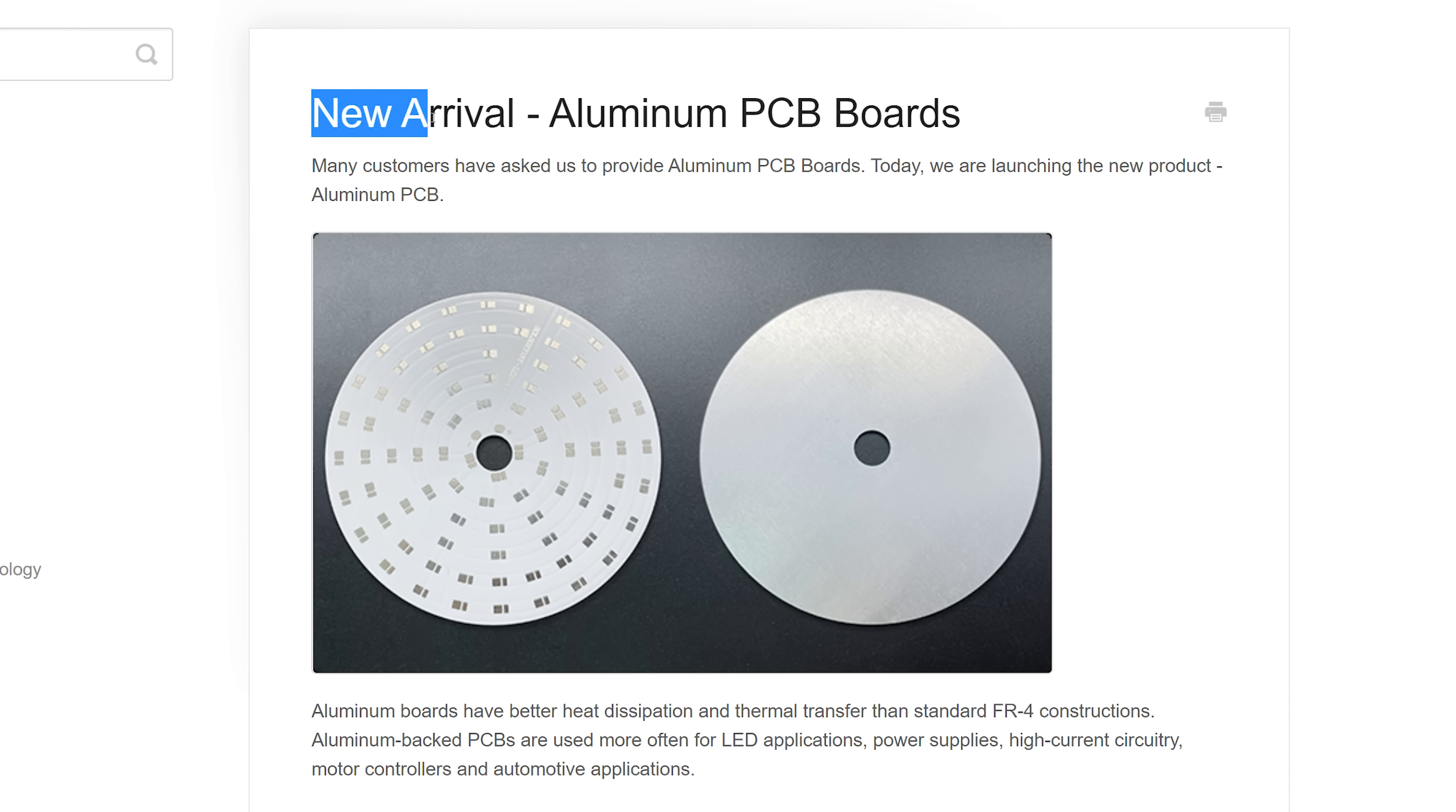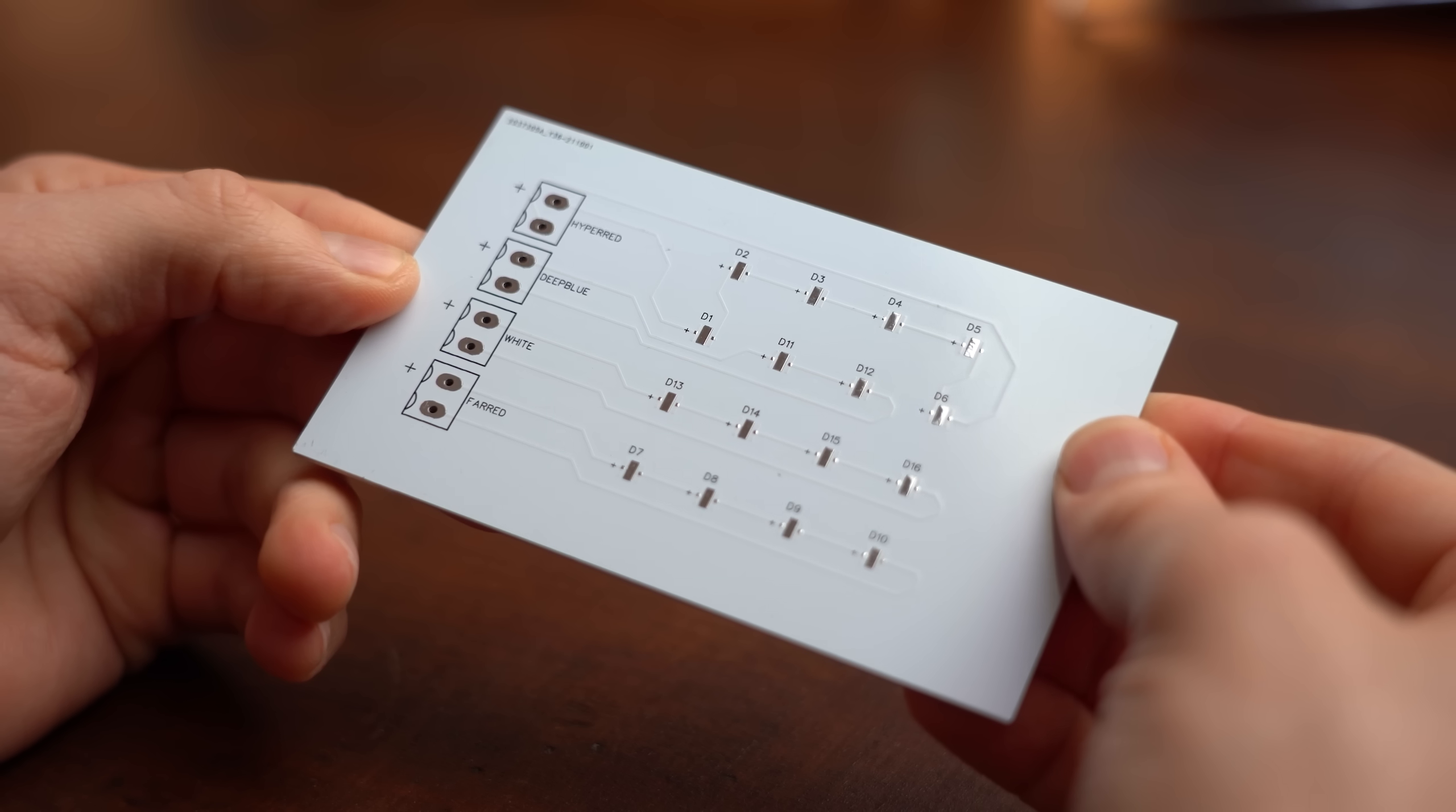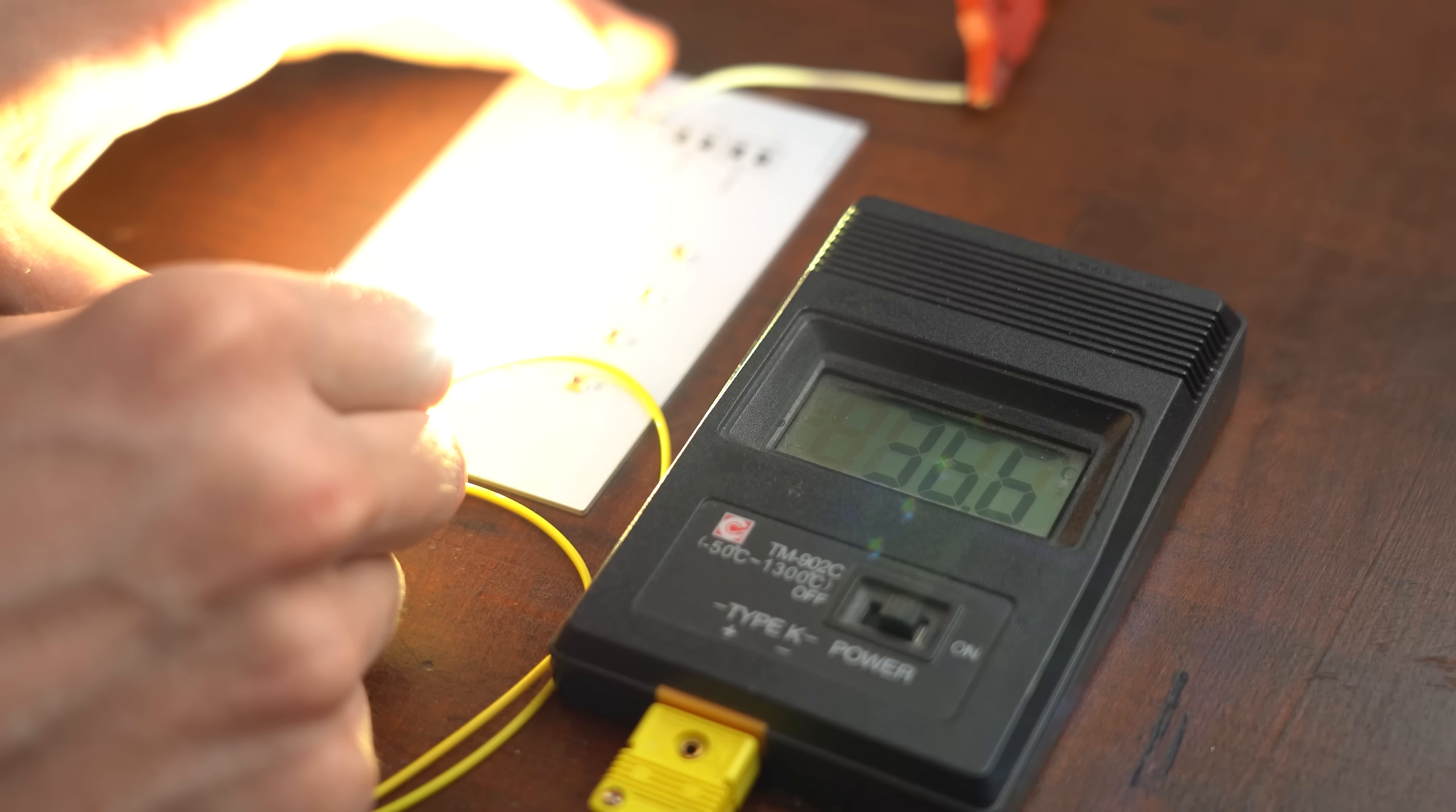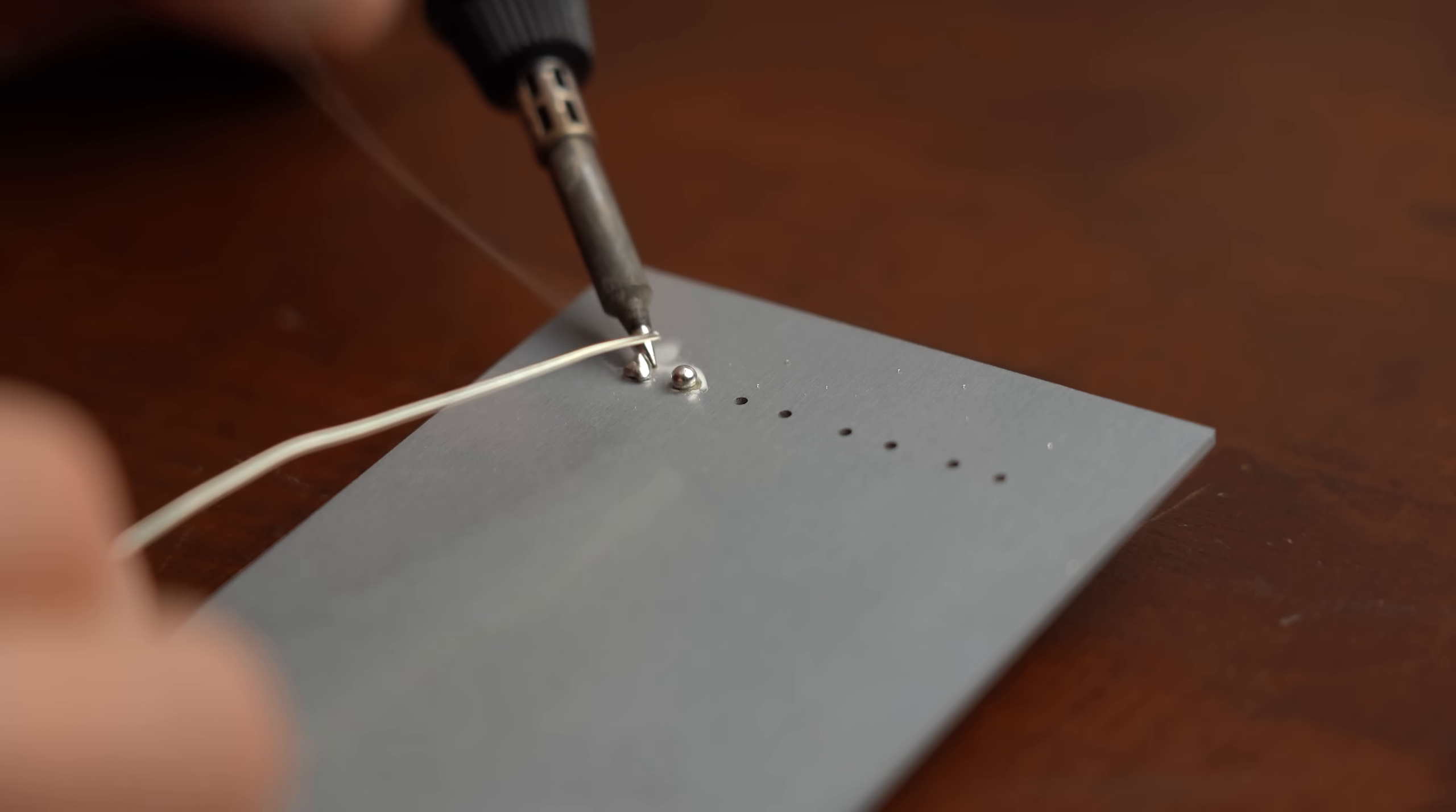And luckily my PCB manufacturer offers aluminum PCBs for one layer designs which mine should be and thus I used this option to get my hands on those promising looking aluminum PCBs which will, spoiler warning, keep my LEDs nicely cool. And of course I also didn't miss the chance to include an error into the design.